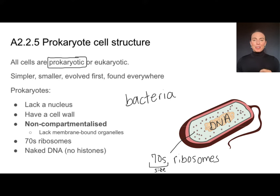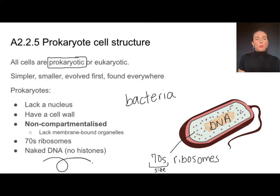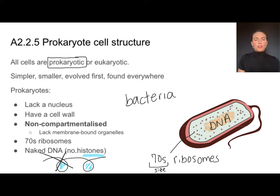The DNA in prokaryotes, not enclosed in a nucleus, is sometimes referred to as naked DNA. That just means that DNA in prokaryotes is not associated with histone proteins. In eukaryotes, DNA is wrapped around little sets of proteins called histone proteins. In prokaryotes, they don't have histone proteins — so we won't find that structure; they just have the naked DNA.